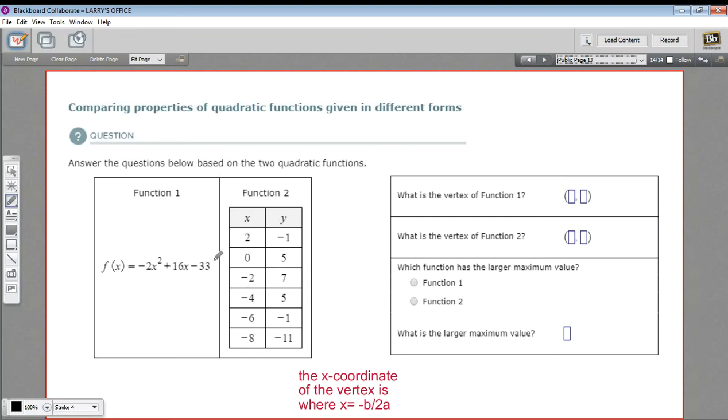In this problem, we have two parabolas. One, we just have the equation for the function that creates the parabola, negative 2x squared plus 16x minus 33. And for the other one, the other function, we have a table of values. And we're supposed to answer some questions, compare these two things. Well, let's see what we've got here.